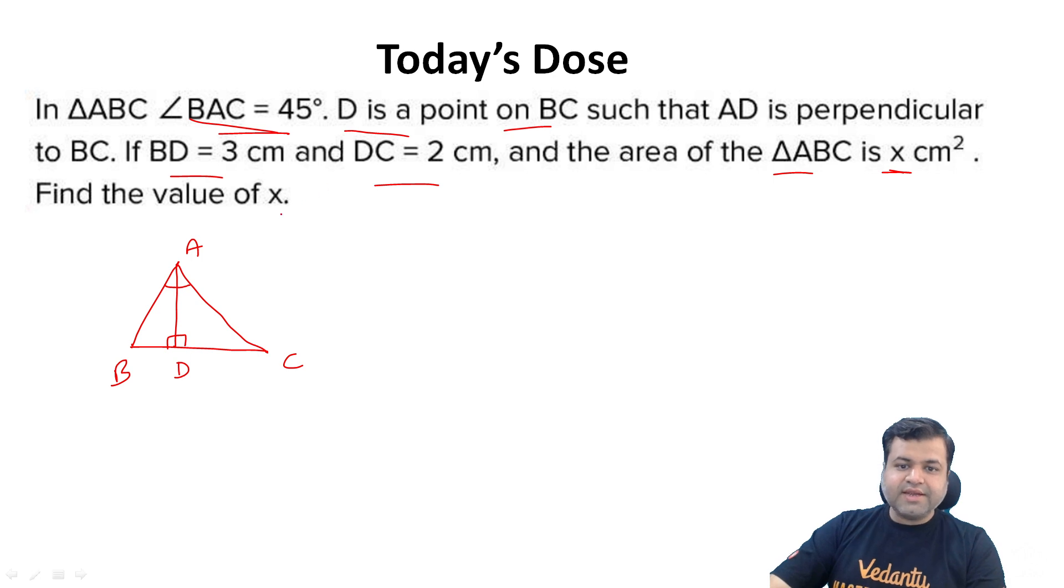This is point D. If BD is 3 and DC is 2, if DC is small and BD is big, then we try to make the figure a little to the scale. So, let's consider C and B. This is C, this is B. Now, in figure we see BD is 3, CD is 2. And the area of triangle ABC is X.